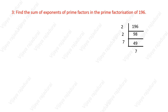So the prime factors of 196 are 2 × 2 × 7 × 7. This we can write as 2 power 2 into 7 power 2. So the exponents are 2 and 2.